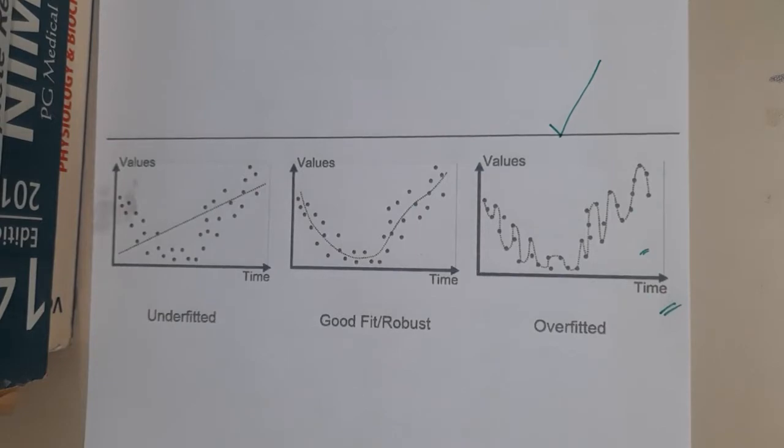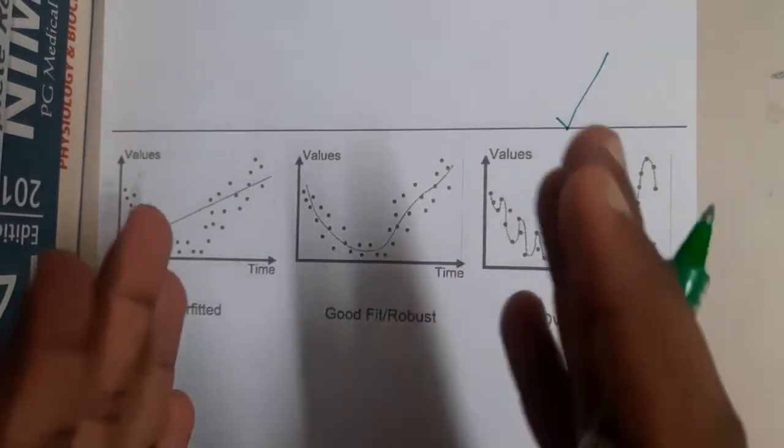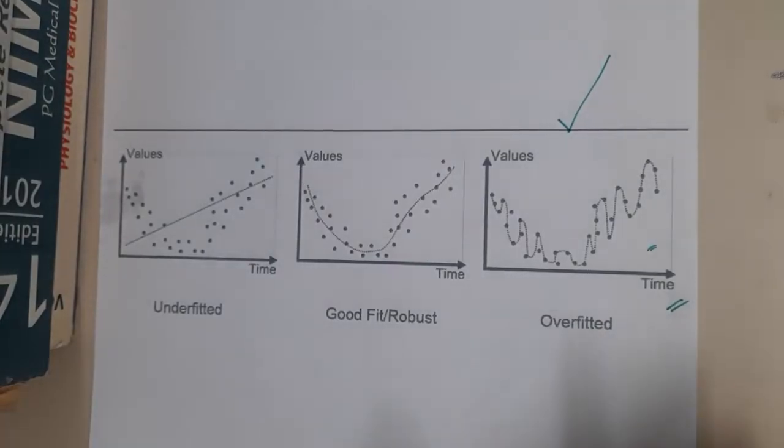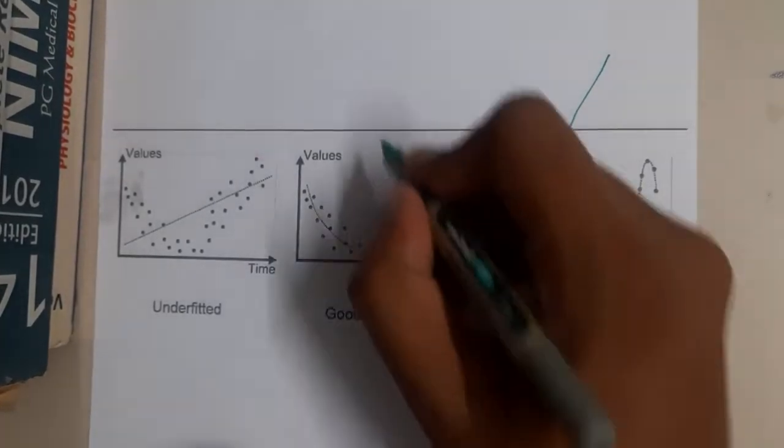If your graph is in a proper structural way and is touching some points but not all points or missing all points, that is a good or robust graph.